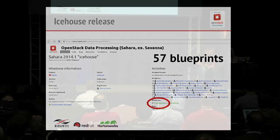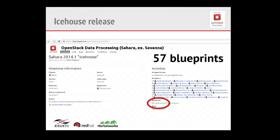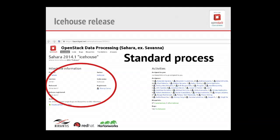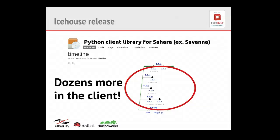We saw a tremendous amount of blueprints and new features added. About 32 people managed to contribute and appear in the Launchpad metrics, and if you look at the commit stream there were another dozen people involved. We did all of this using the standard OpenStack process, releasing at the same time as all other OpenStack projects. If you look at the client library, disk image builder elements, puppet modules, and the dashboard, you see even more contributions.